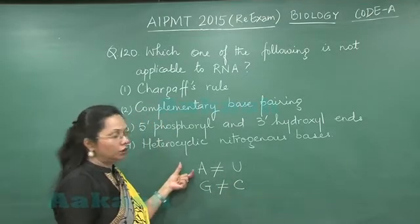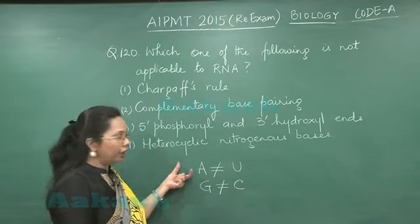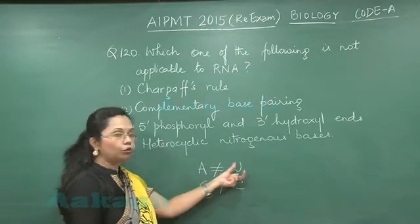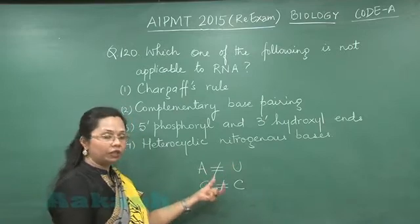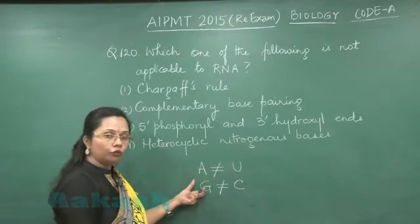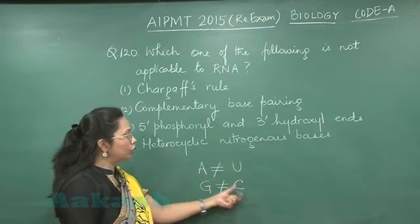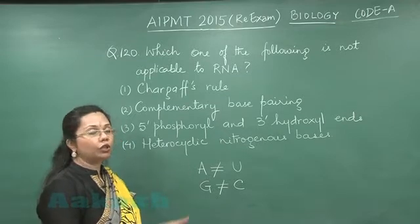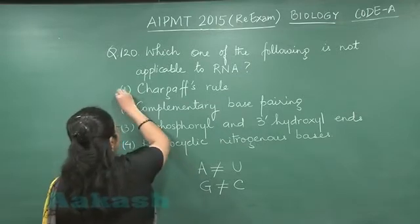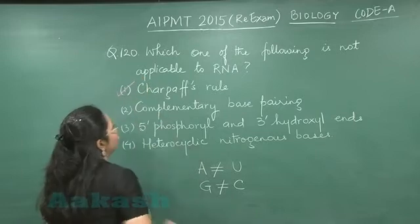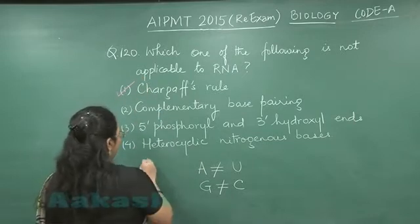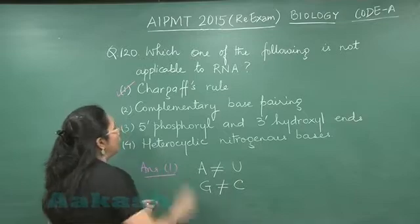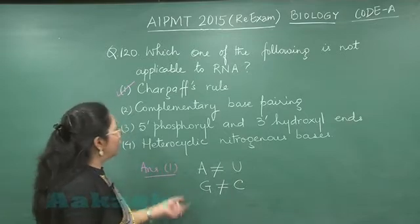This is different from DNA, where the amount of adenine is equal to the amount of thymine because of the base pairing rule, and the amount of guanine is equal to cytosine. So that means RNA will not be following Chargaff's rule. Our answer is the first one — Chargaff's rule.